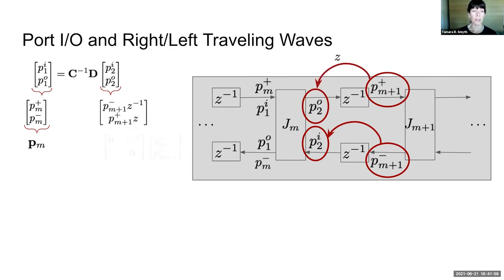This vector can be decomposed to remove the delayed components and to reorder the terms, the traveling waves, so that they are of the same order, and we can define a vector P sub M that gives the right and left traveling waves in section M.